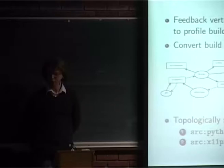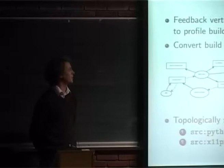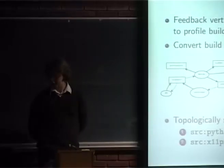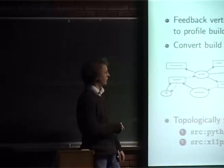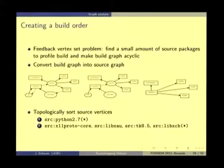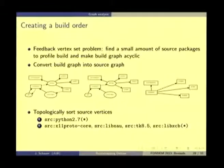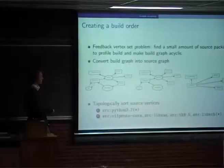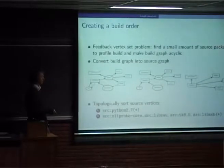The next step is to create a build order, which is the feedback vertex set problem — finding a small number of source packages to profile-build to make the graph acyclic. The build graph is changed into a source graph by removing installation set nodes via path contraction. In the example, forcing two specific edges to be broken makes the graph acyclic. By topologically sorting the resulting vertices, we can deduce a build order — for example, first build Python 2.7 with a profile, then all the other packages.